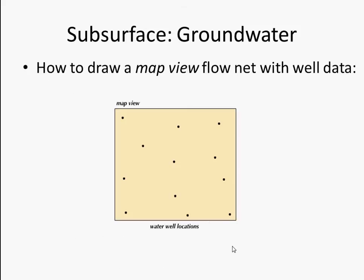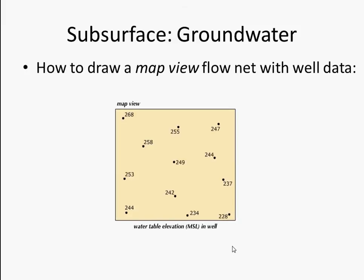This is a map view — like an aerial photo, so we're looking down on a landscape. These little dots are showing water well locations. In this case, we're drawing how water is moving at the surface: where the water table is going and where the groundwater beneath that is going. These are monitoring wells, and this shows you the height of the water in all of those wells, which is equal to the hydraulic head.